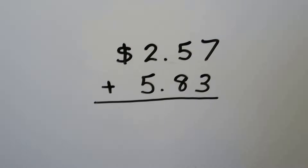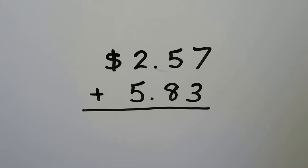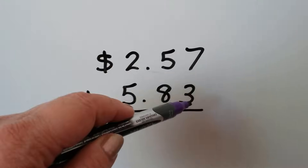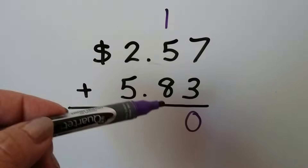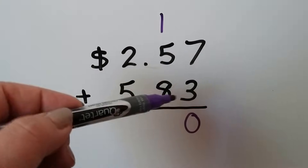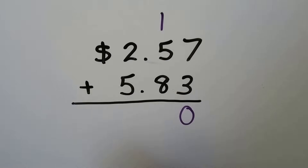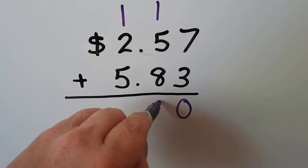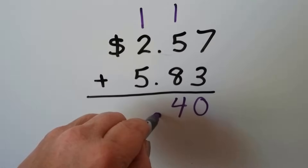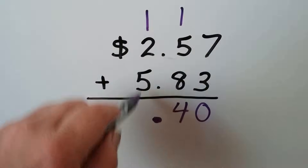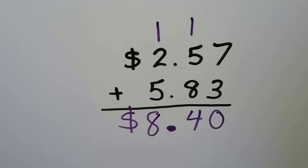Let's try one more addition one before we do subtraction. We have 2 dollars and 57 cents and we're going to add 5 dollars and 83 cents. We add the ones: 7 plus 3, that's 10. We regroup the 1 and put the 0 down. Now we add the tens place: 8 plus 5, that's 13, and 1 more is 14. We regroup — put the 1 up here and the 4 down here. So now we gave 1 to the dollars. We put our decimal point in a column and add our dollars: 5, 6, 7, 8. We have 8 dollars and 40 cents.